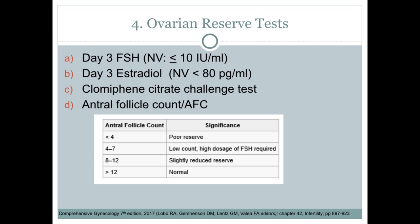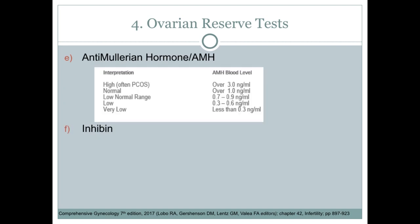The kinds of ovarian reserve tests include D3 FSH and D3 estradiol — the most common and cheapest. We want D3 FSH to be less than or equal to 10; if more than 10, that signifies poor ovarian reserve. D3 estradiol should be less than 80. We also do the clomiphene citrate challenge test, antral follicle count (AFC) where normal is more than 12, and the gold standard — anti-Müllerian hormone (AMH) — where we want levels greater than 1 nanogram per mL.